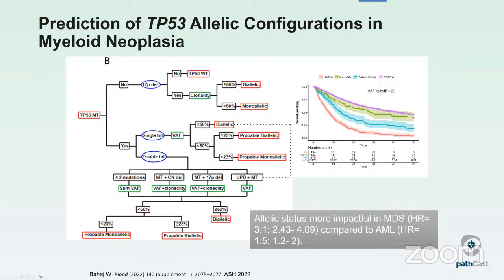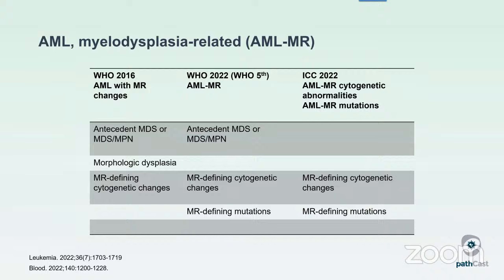An abstract presented at ASH in 2022 used machine learning algorithms to predict allelic status of TP53 in AML. Using complicated statistical models with known biallelic and known monoallelic cases as gold standard, they came up with a variant allele frequency cutoff of 23% associated with high-risk features and probable biallelic loss of TP53.